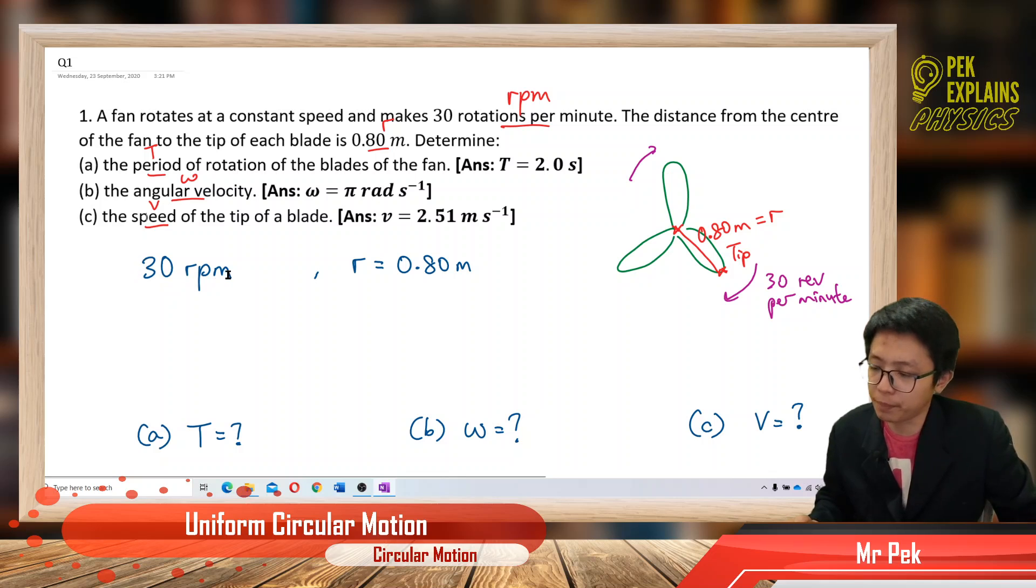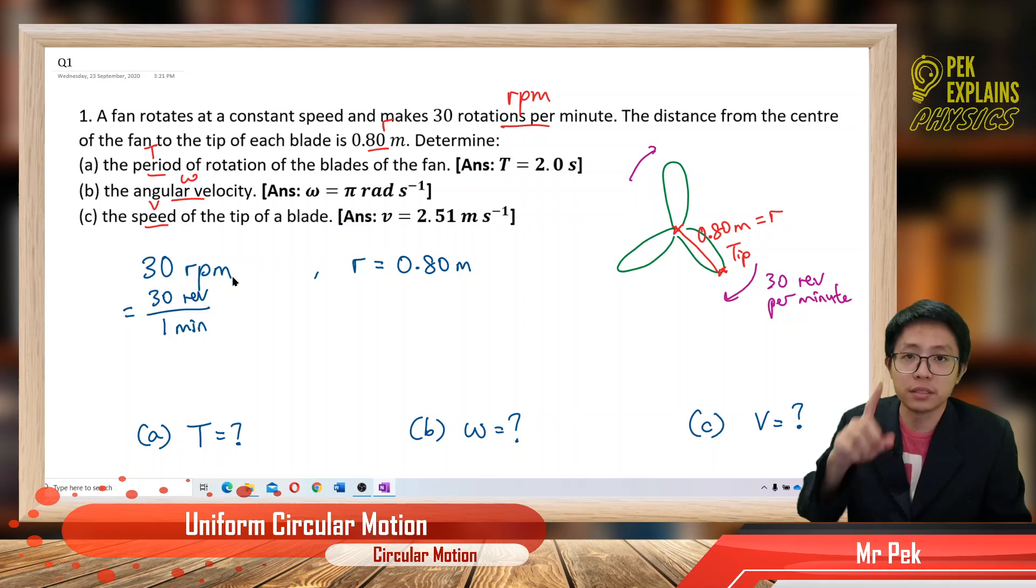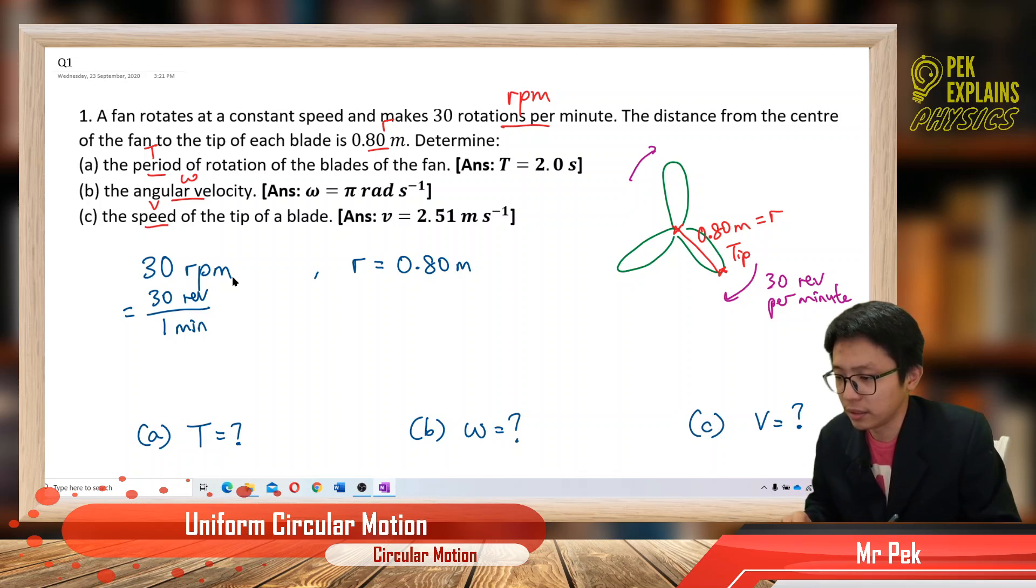We have 30 RPM, we can convert to omega. So what does 30 RPM mean? 30 RPM actually means 30 revolutions per one minute. That means it makes 30 rotations in one minute. So we can convert to omega.